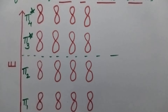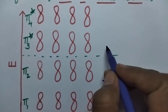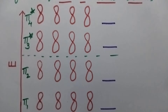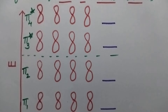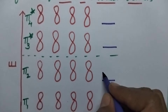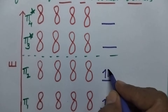4 carbon atoms contribute p orbitals for the pi system, and hence 4 electrons will be present. According to Hund's principle and Aufbau principle, the molecular orbitals will be filled. So initially, the π1 and π2 molecular orbitals will be filled.